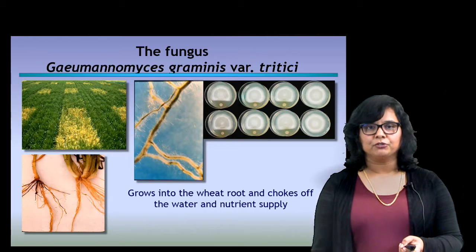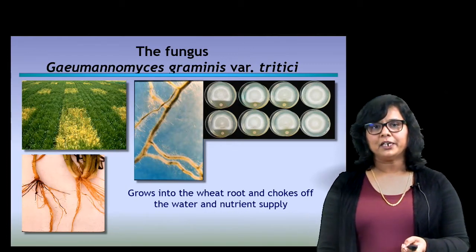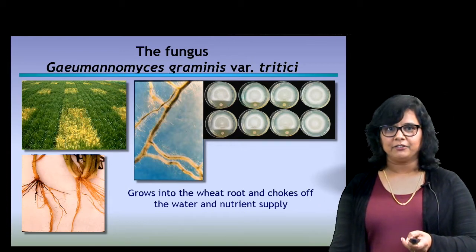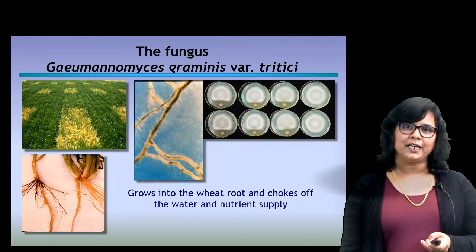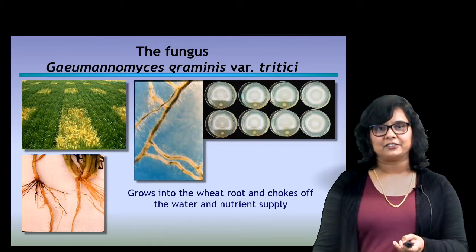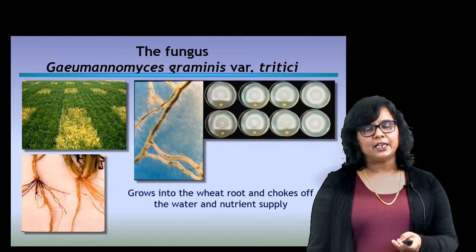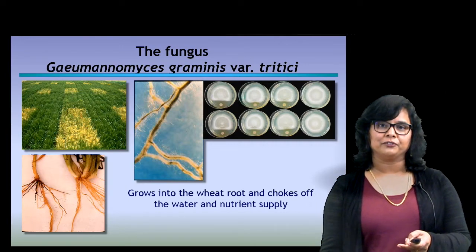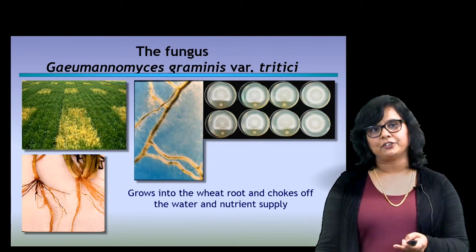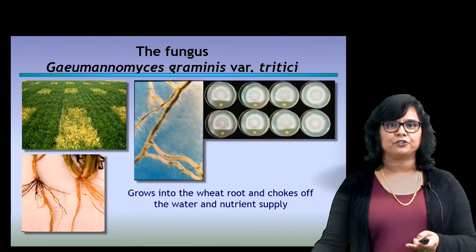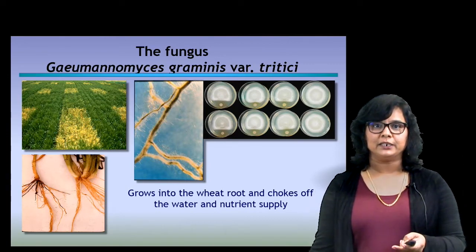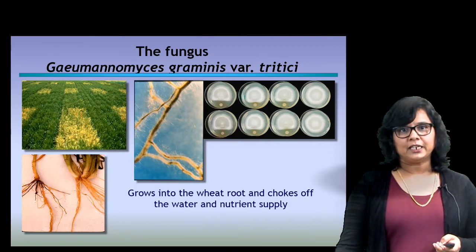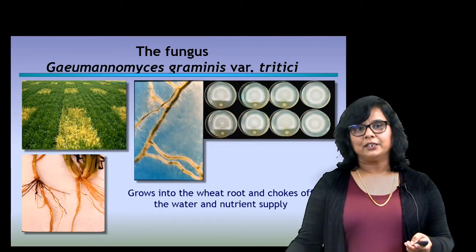The fungus GGT grows into the root of the wheat plant and chokes off the water supply. Why is water so important for the crop? If you remember photosynthesis, there was the light reaction and the Calvin-Benson cycle. The light reaction involves electrons moving from Photosystem II when hit by light, going through the electron transport chain. Photosystem II is missing an electron, which gets replaced by photolysis — where water is broken down, the electron enters Photosystem II, oxygen is released, and hydrogen ions form the gradient that leads to ATP production. If there's no water, the electron is not released, it does not enter Photosystem II, and therefore ATP production cannot happen.